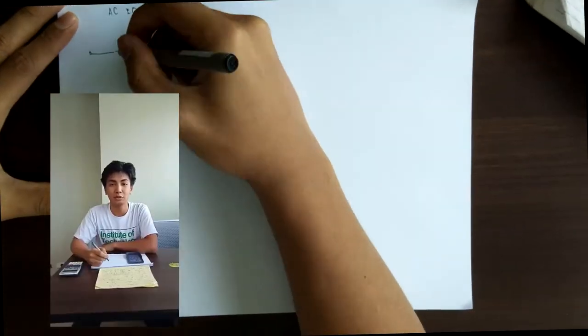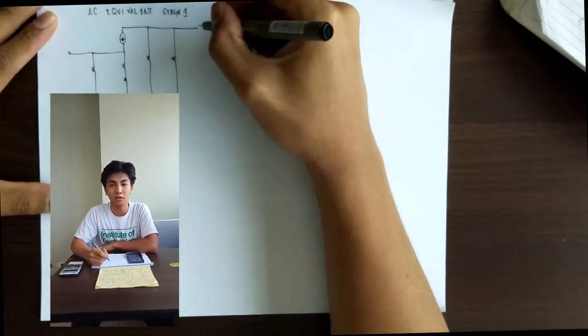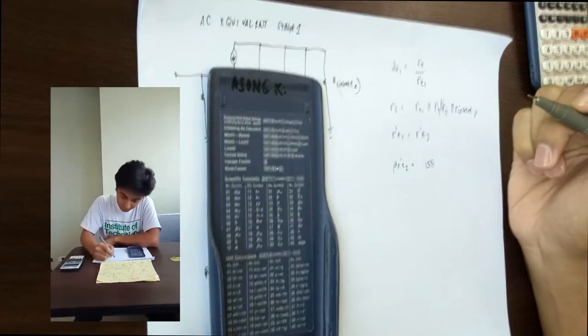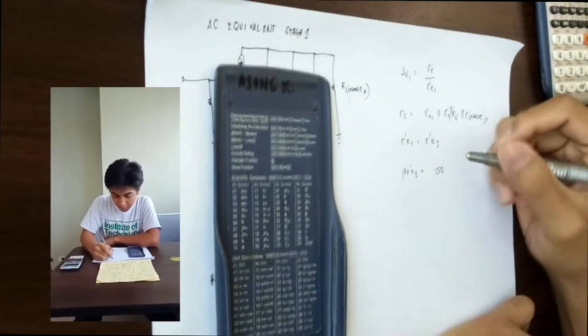In the AC analysis, we should be able to get voltage gain 1. Voltage gain 1 is equivalent to RC over R'E.